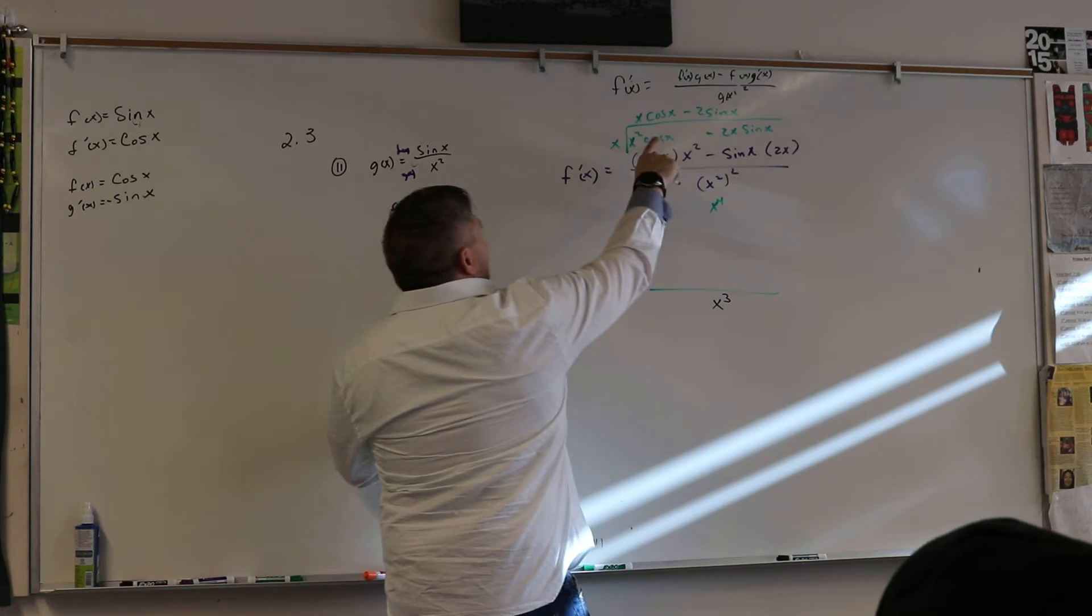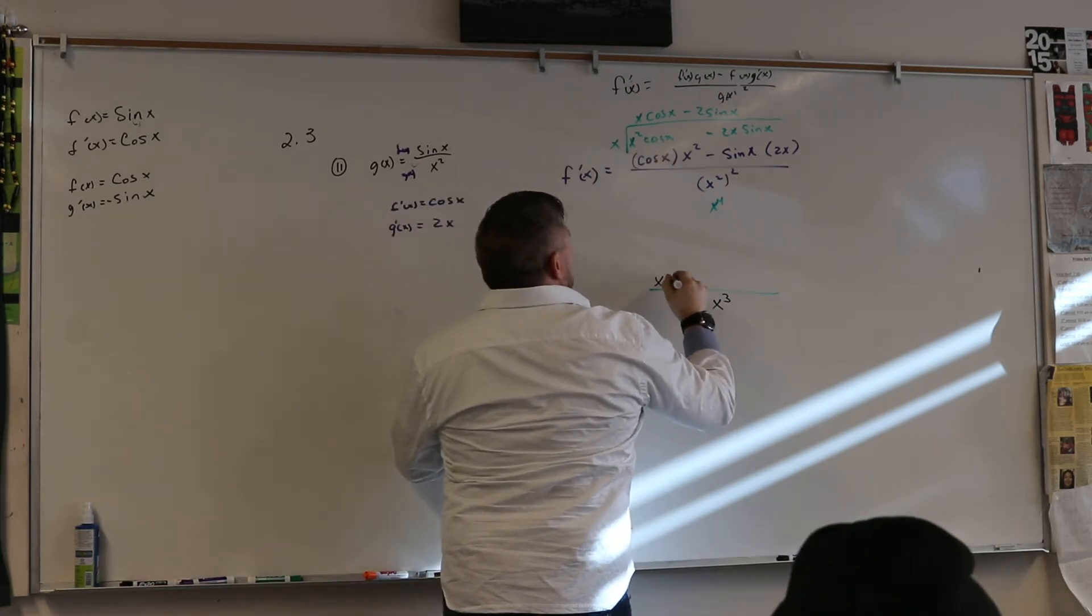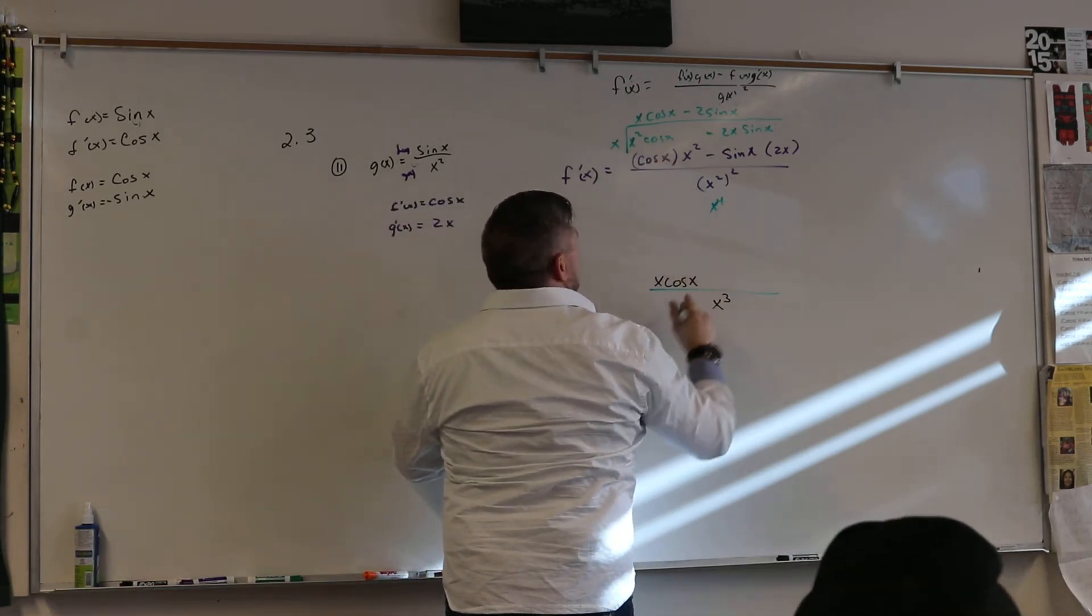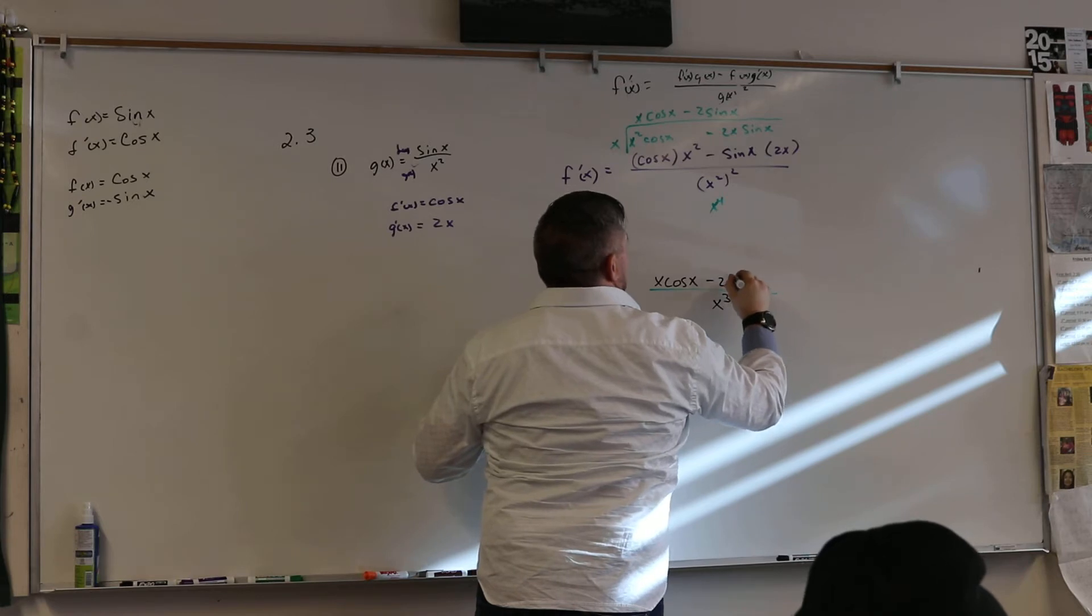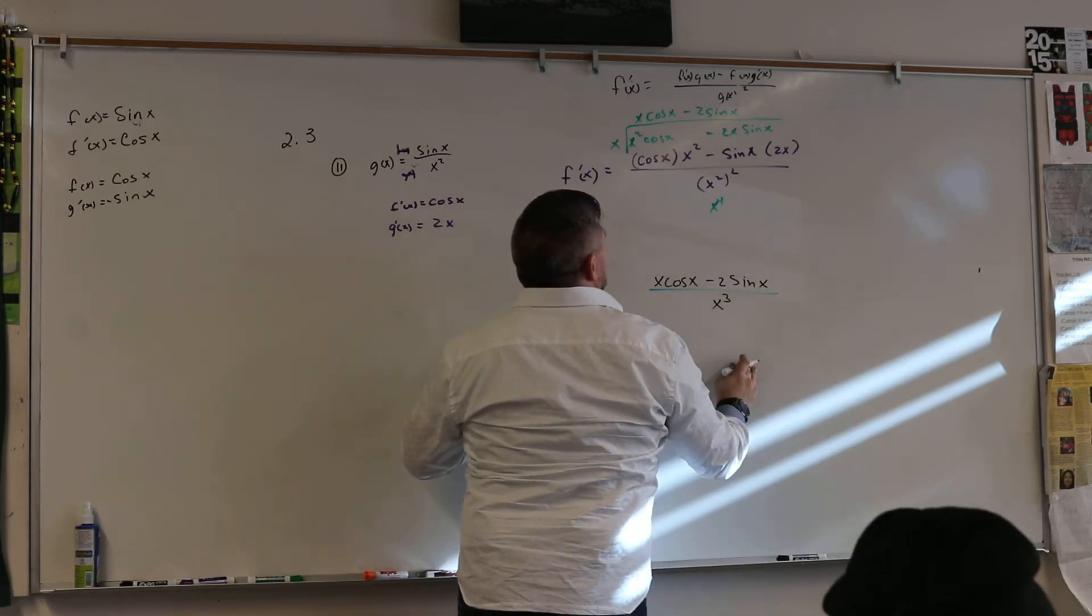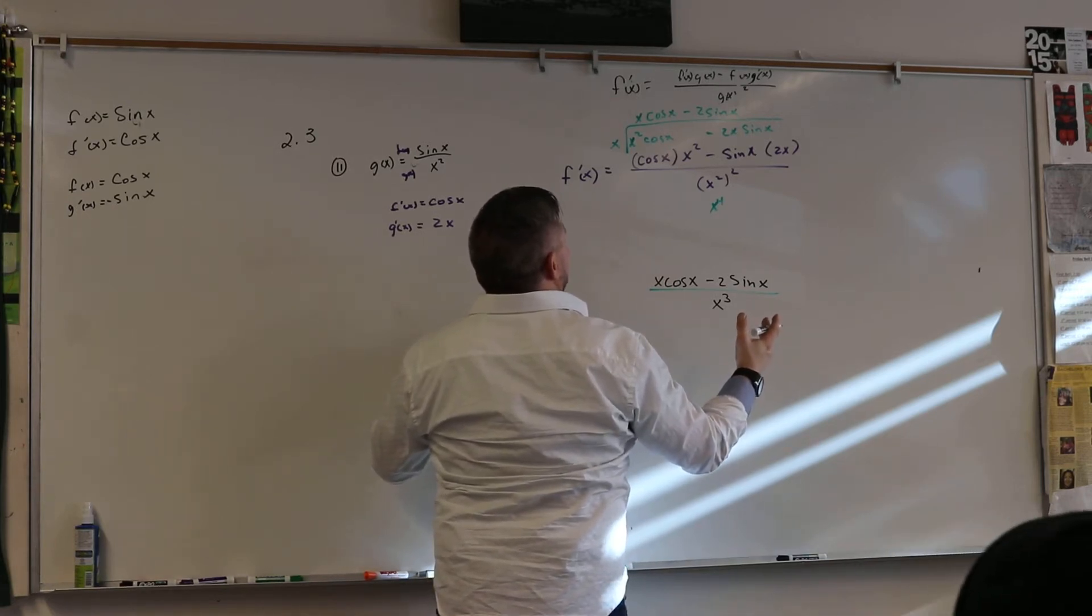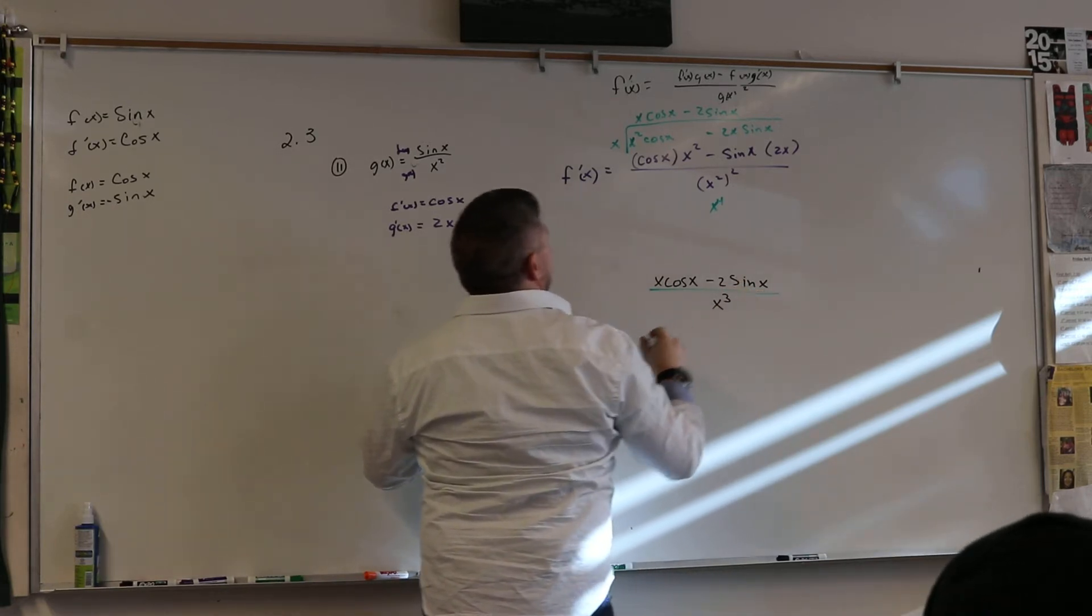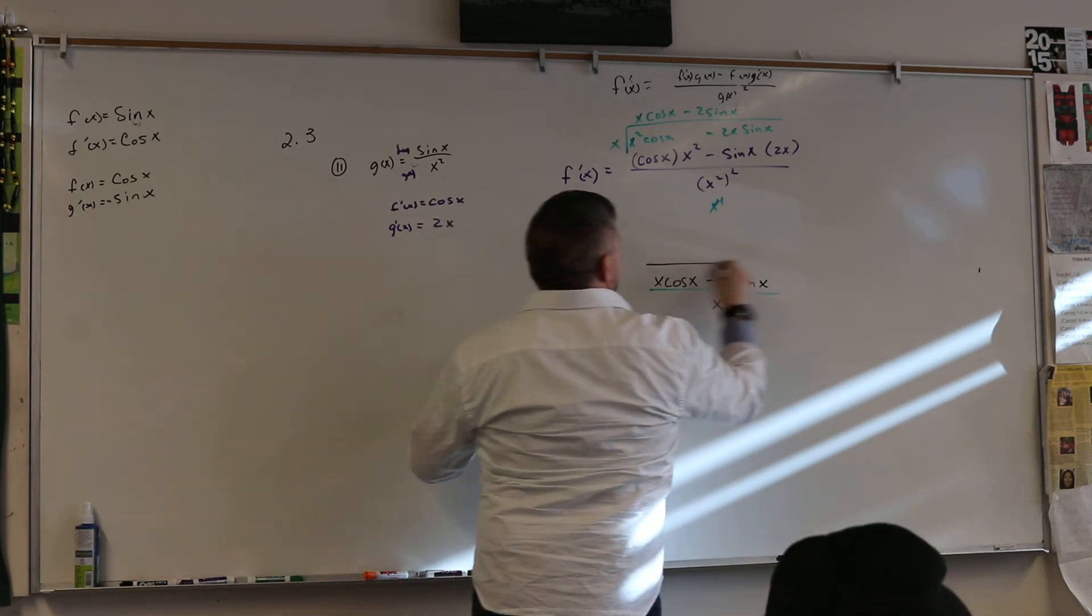And then we would end up with x cosine x minus 2 sine of x. Wait, I don't know. But yeah, 2 sine of x. And that's it.